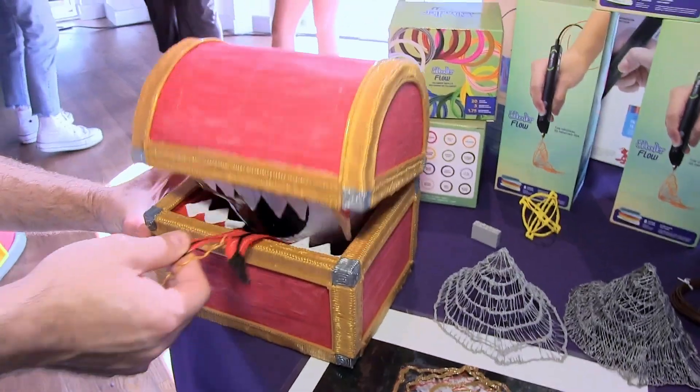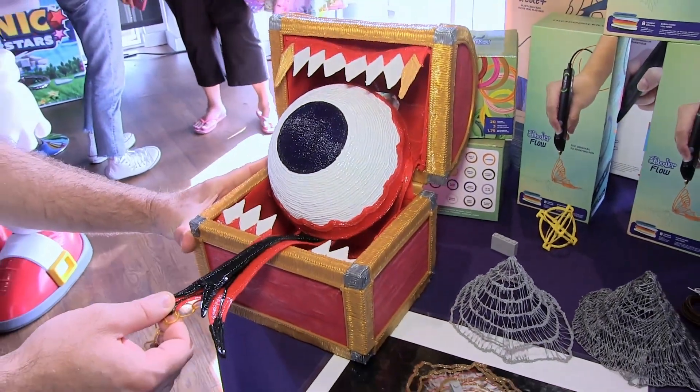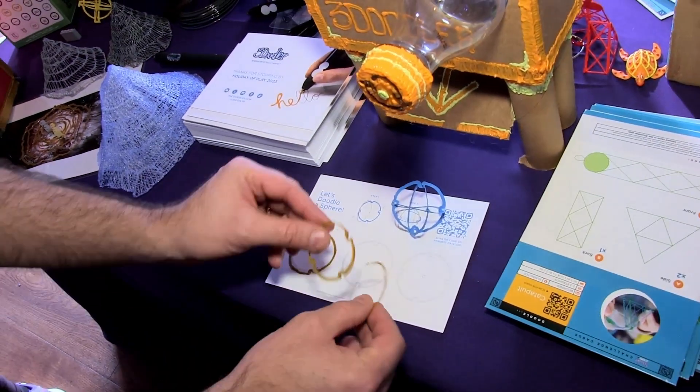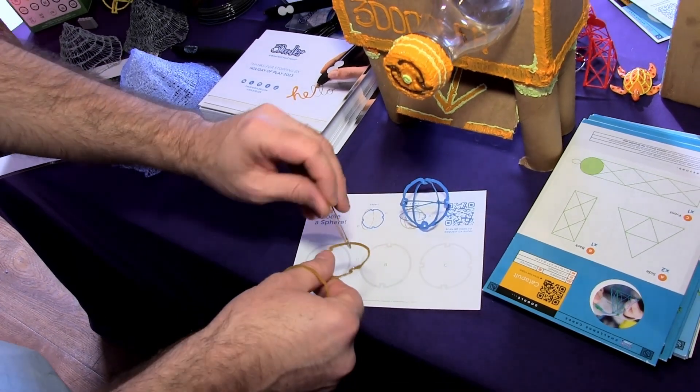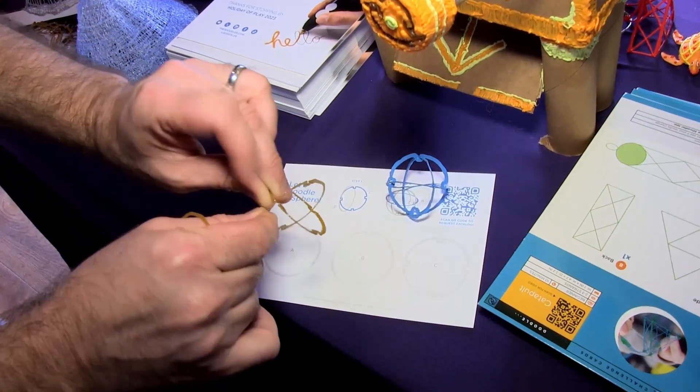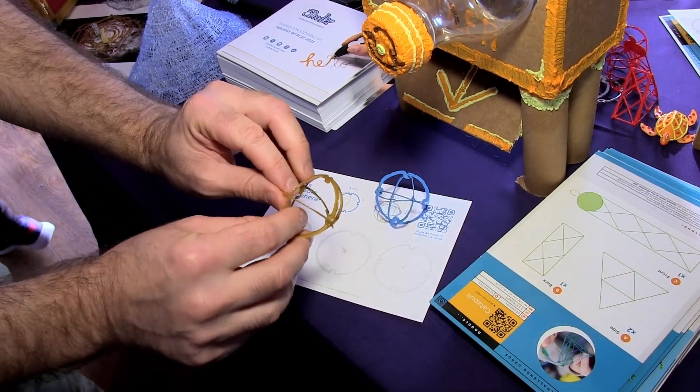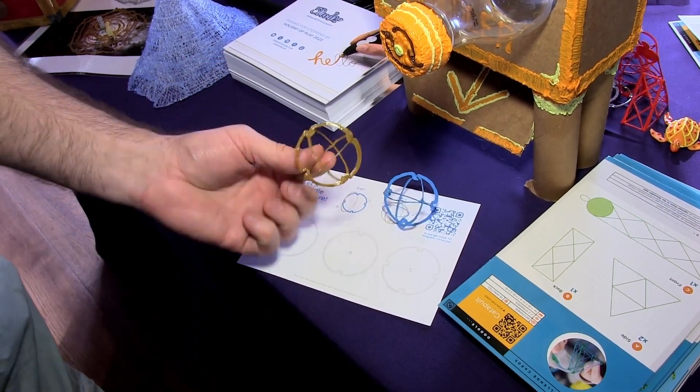Going down that same line, we realize that we can make lots of fun stuff out of flat things. For example, this is how we're making spheres these days: by simply drawing these three pieces and then snapping them together to create one of the harder objects to draw in the world, a sphere.